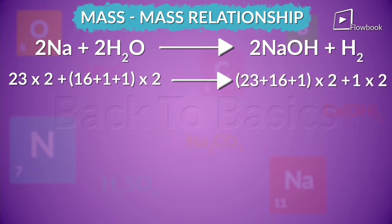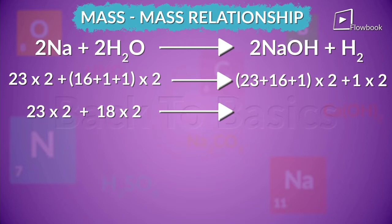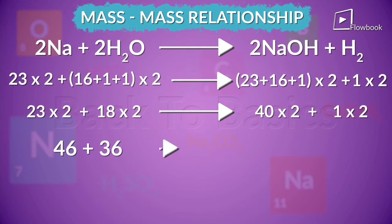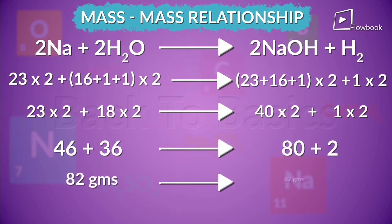Na is 23, which is 23 times 2. H2O has 18, so 18 times 2. NaOH has 40, so 40 times 2, and H is 1, so 1 times 2. 46 plus 36 gives us 80 plus 2. So we get 82 grams gives us 82 grams. Now you see how it's so well balanced.